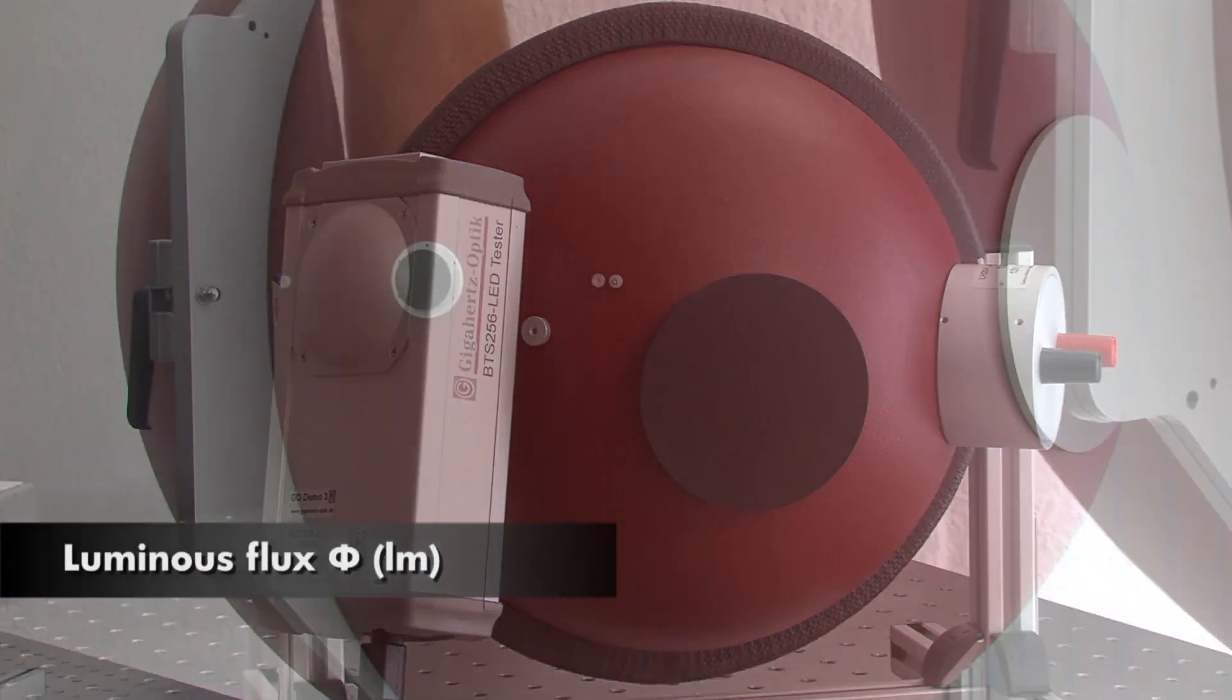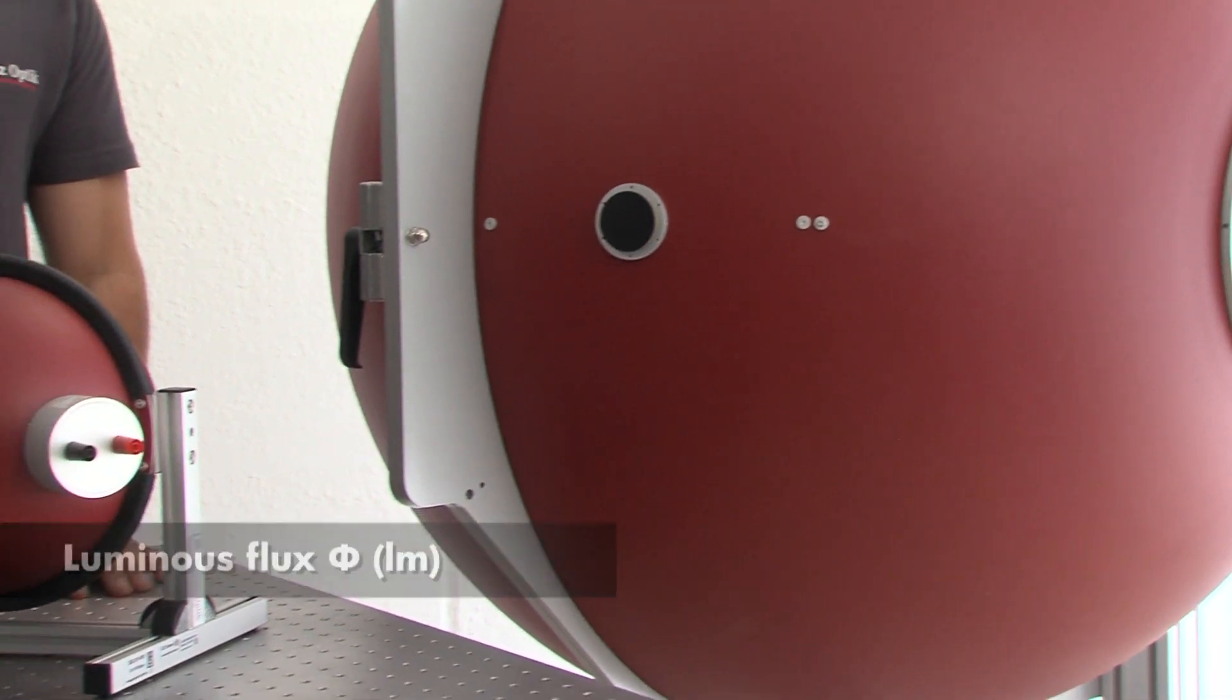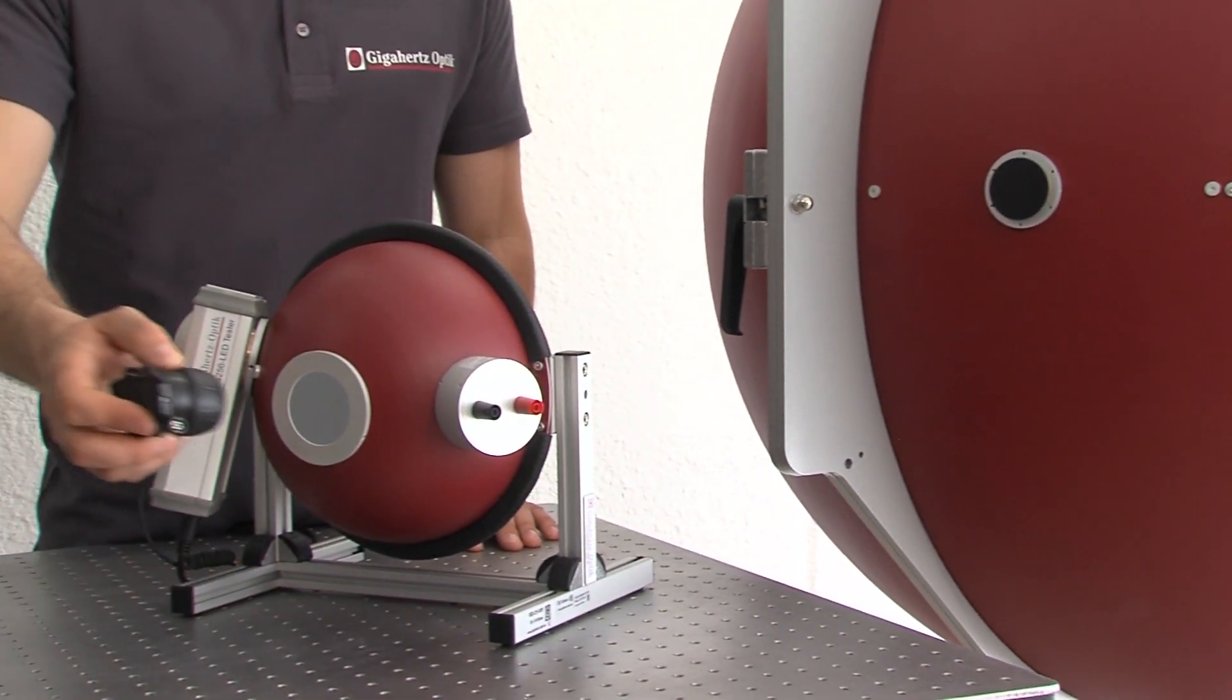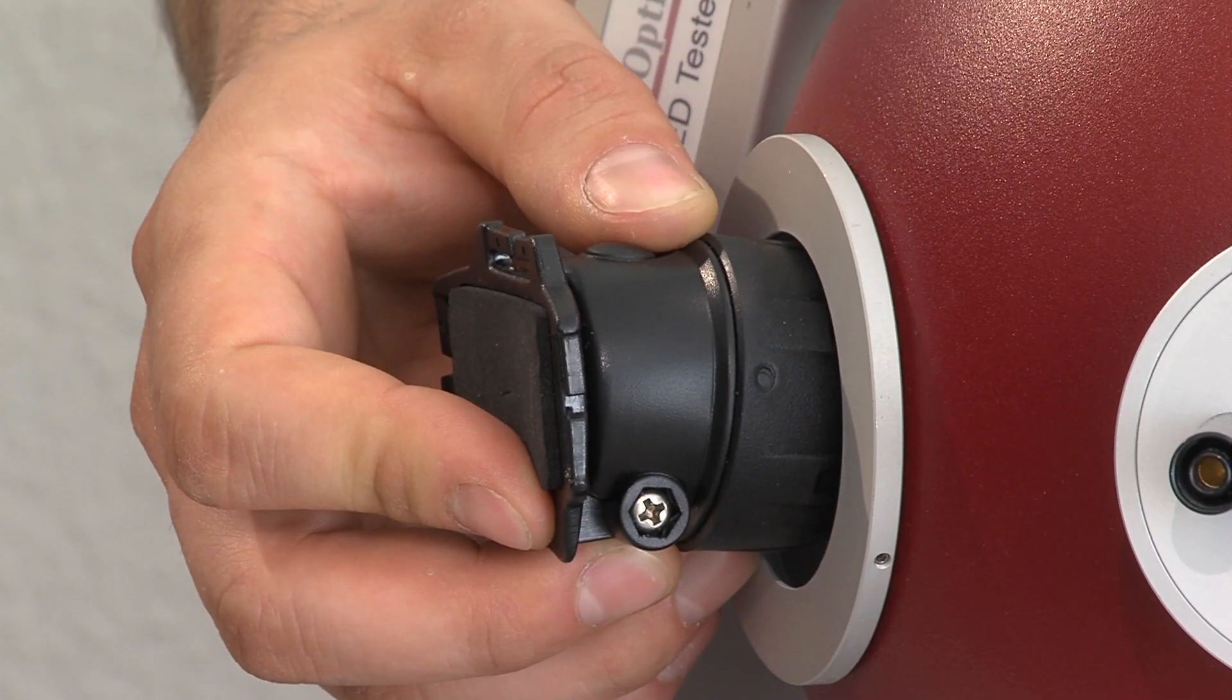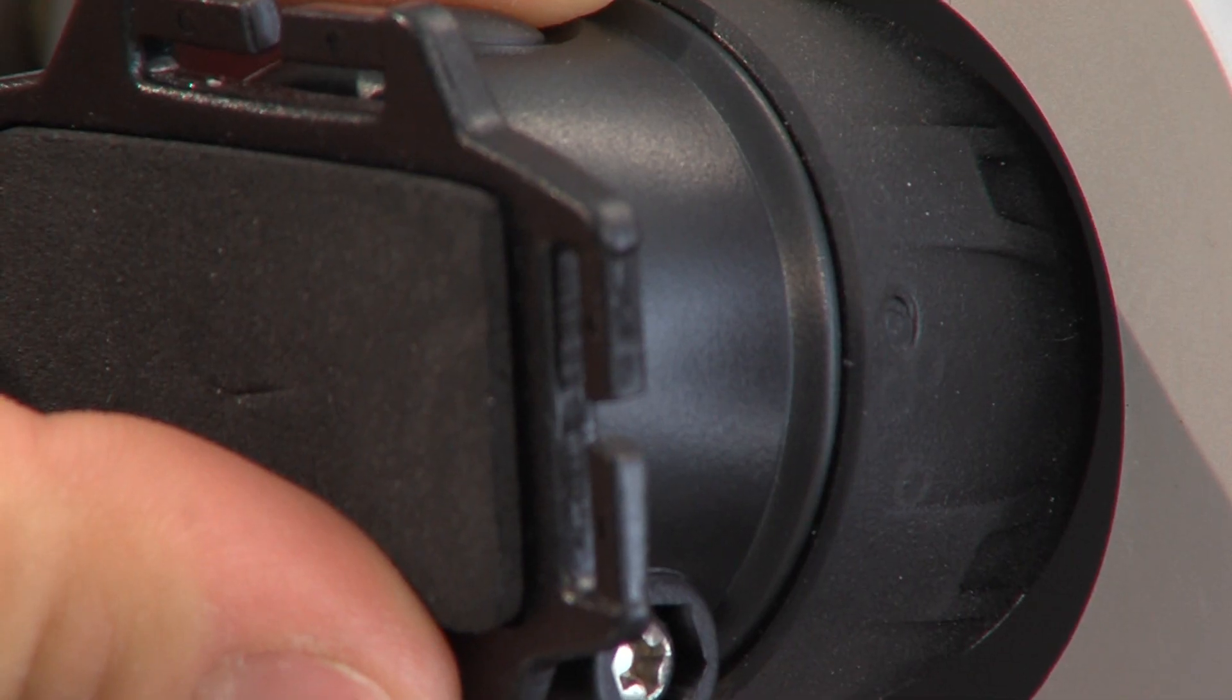For luminous flux and luminous color measurement, the LED matrix or spot source must be mounted at the light input port of the integrating sphere so that all of the light enters the integrating sphere.